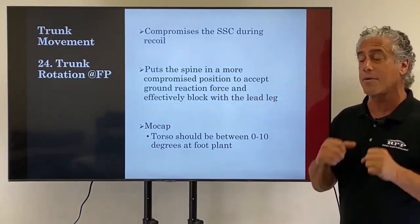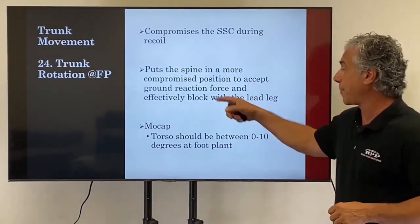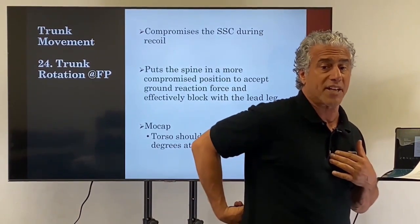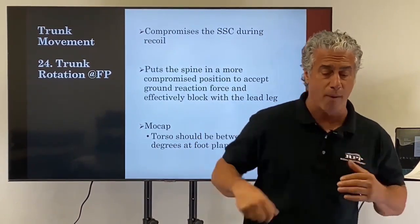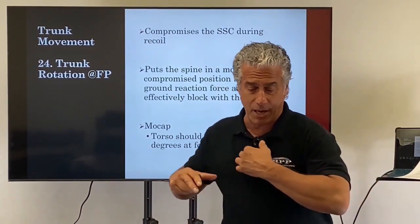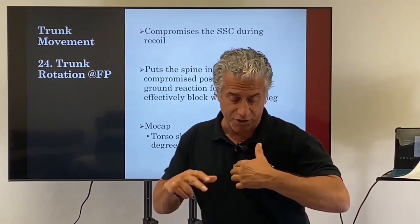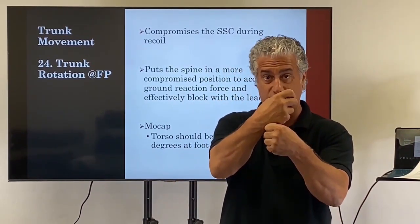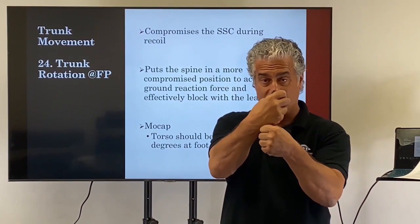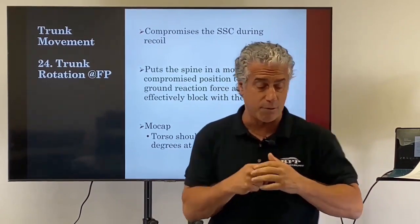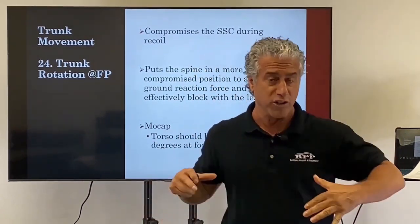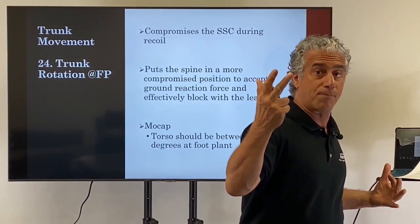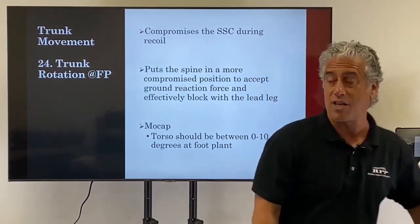Coming around early puts the spine in a more compromised position to accept ground reaction force and creates excess flexion in the spine. By keeping the torso back while the hips are moving forward, it allows good tension and torque on that spine. That torque creates a much more stable spine to land and accept force, and eventually close the gap with hip and shoulder separation.